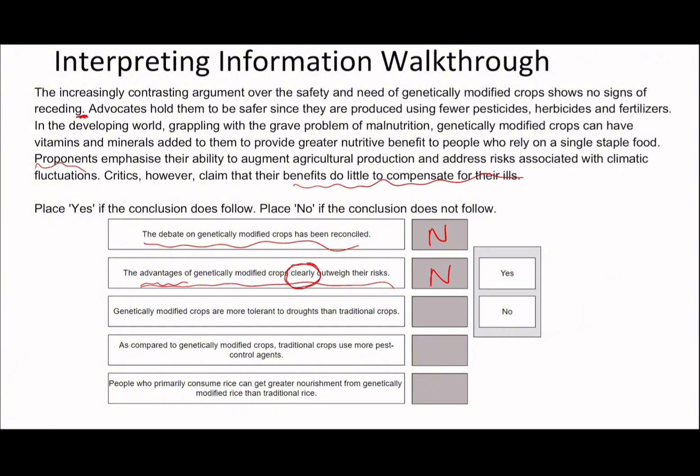In this section you're allowed to make inferences, but they have to be relevant. Because a drought is a climatic fluctuation, you can say yes to this — it says the crops allow them to address risks associated with climatic fluctuations, so therefore they're going to be more tolerant to climatic fluctuations such as droughts. In verbal reasoning, it would have been can't tell because they haven't specified the word 'droughts.' I understand this is annoying, but you just have to learn to go with it — this is just how they've designed the questions to be.